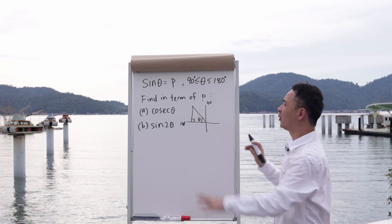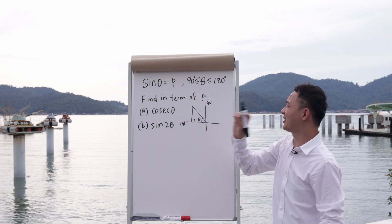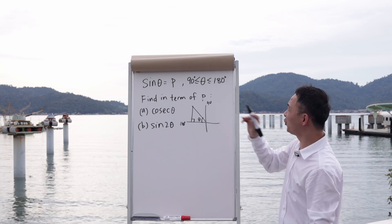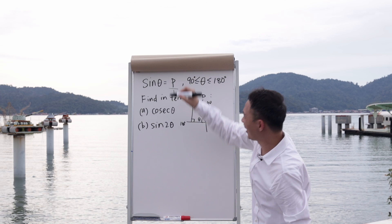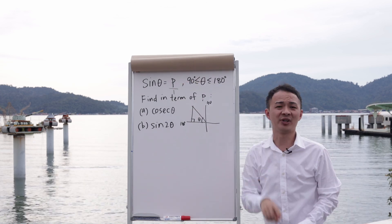After that, you need to know what is sin theta. Sin theta is p, right? But you cannot say it's just p, because sin is opposite over hypotenuse. So you need to know the hypotenuse. If you see p, you need to write it as p over 1.